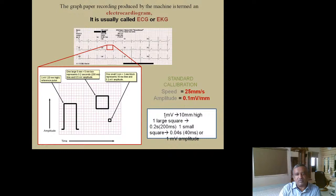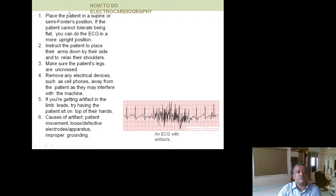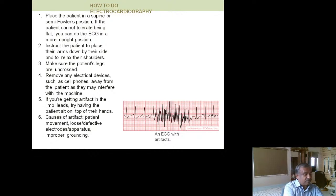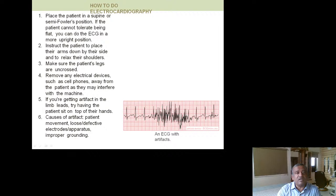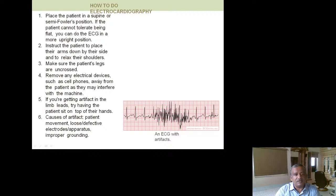To perform an ECG, place the patient in a supine or semi-recumbent position. If the patient cannot tolerate lying flat — for example due to pulmonary disease — a more upright position is acceptable. Instruct the patient to place arms down by their sides, relax the shoulders, and keep legs uncrossed. Remove electrical devices like mobile phones to avoid interference. If artifacts appear in a limb lead, try having the patient sit on top of their hands.